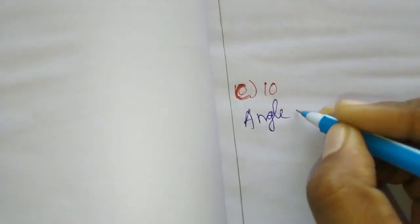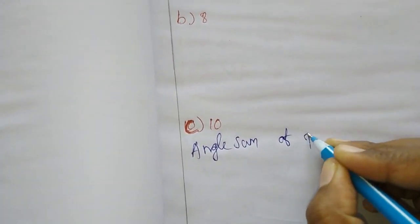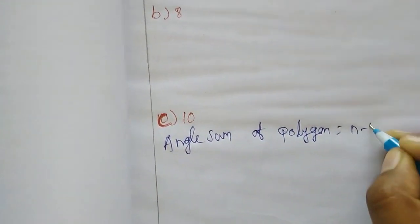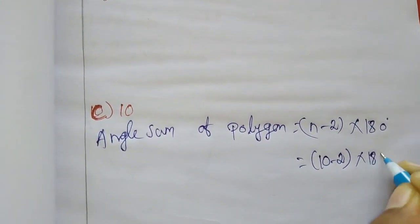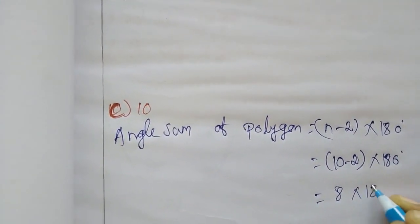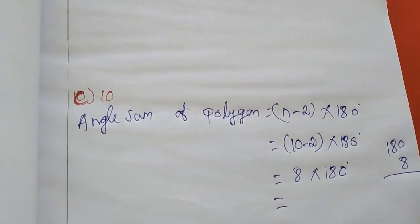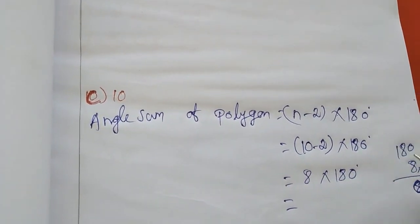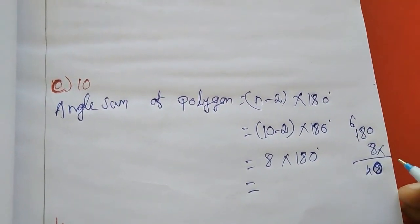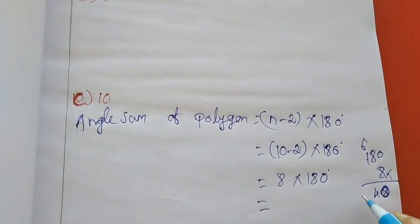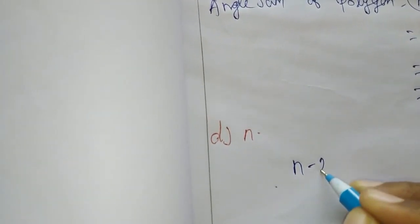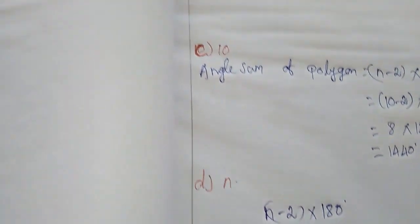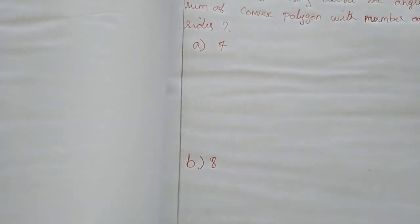We form the formula: angle sum of polygon equals n minus 2 into 180 degrees. Here for n equal to 10: 10 minus 2 into 180 degrees, that is 8 into 180 degrees. Multiplying: 8 into 180 gives 1440 degrees. For n, the formula is simply n minus 2 into 180 degrees. Like this, you have to write the formula and substitute 8 and 7 to get the answers — that is homework for you.